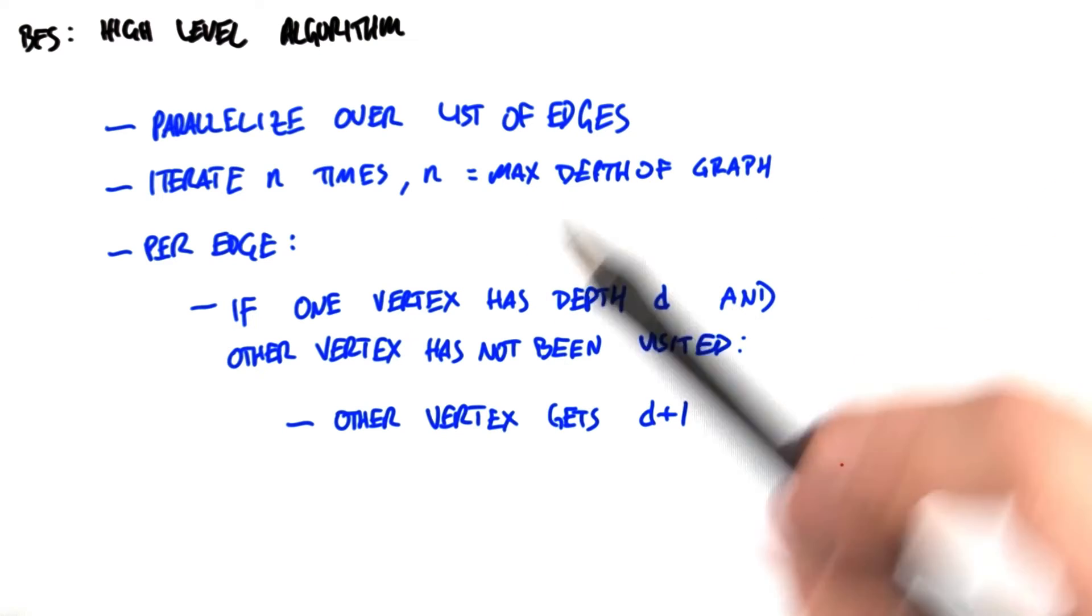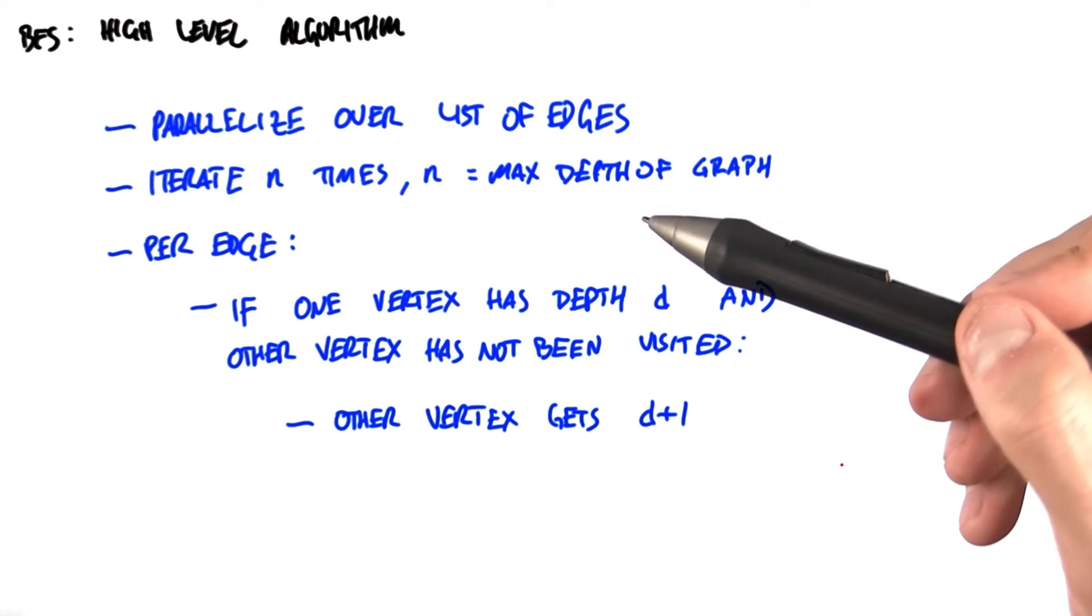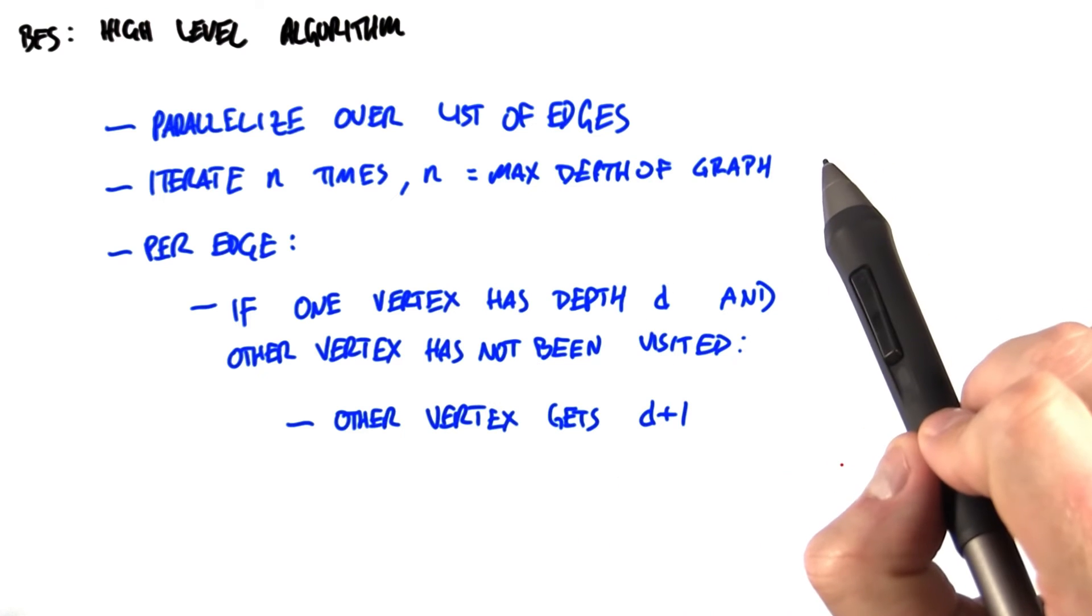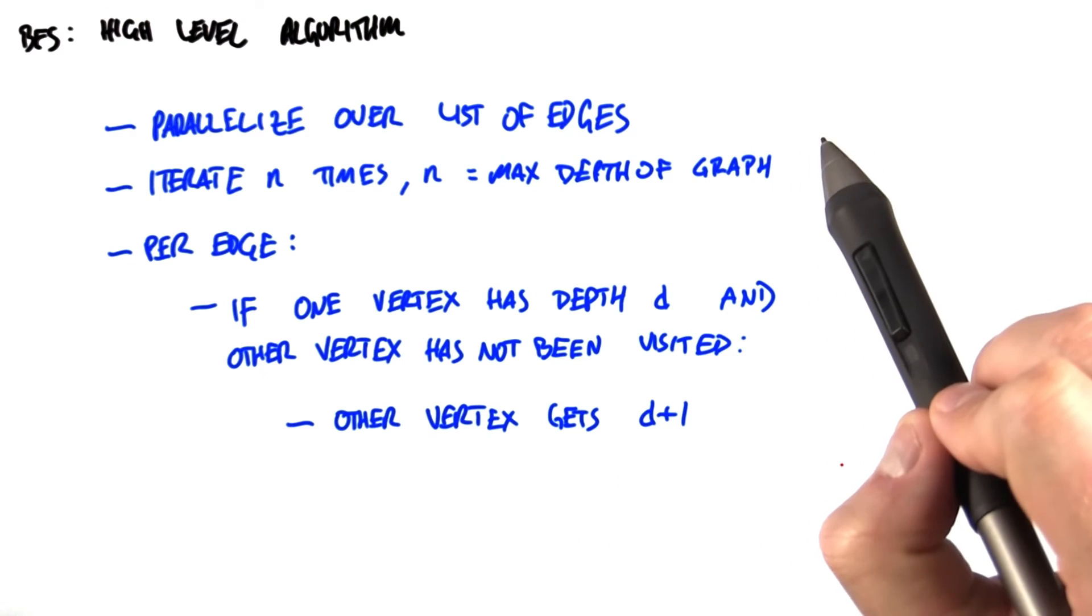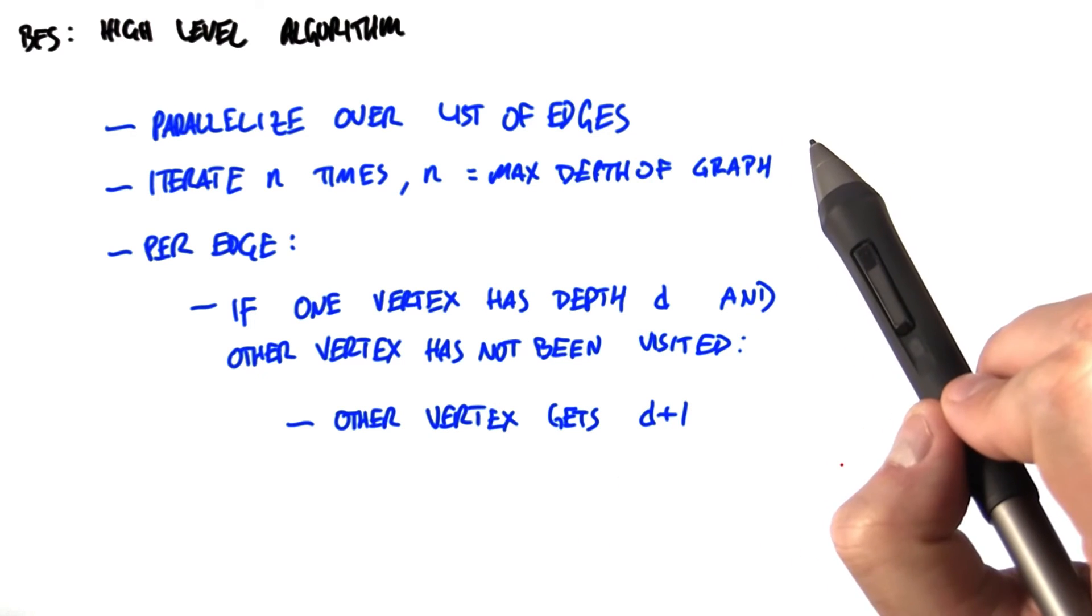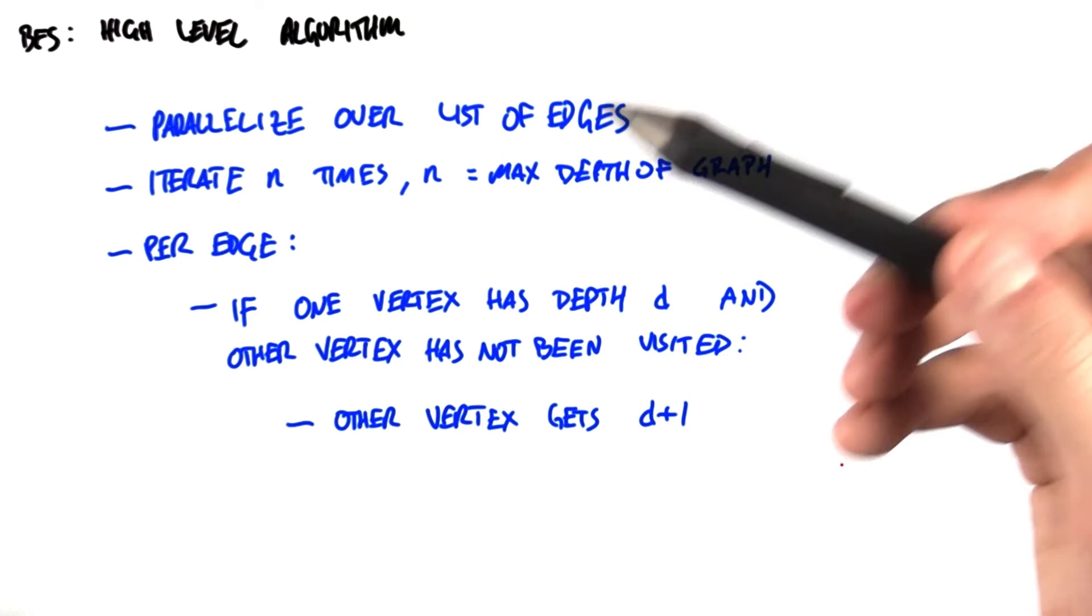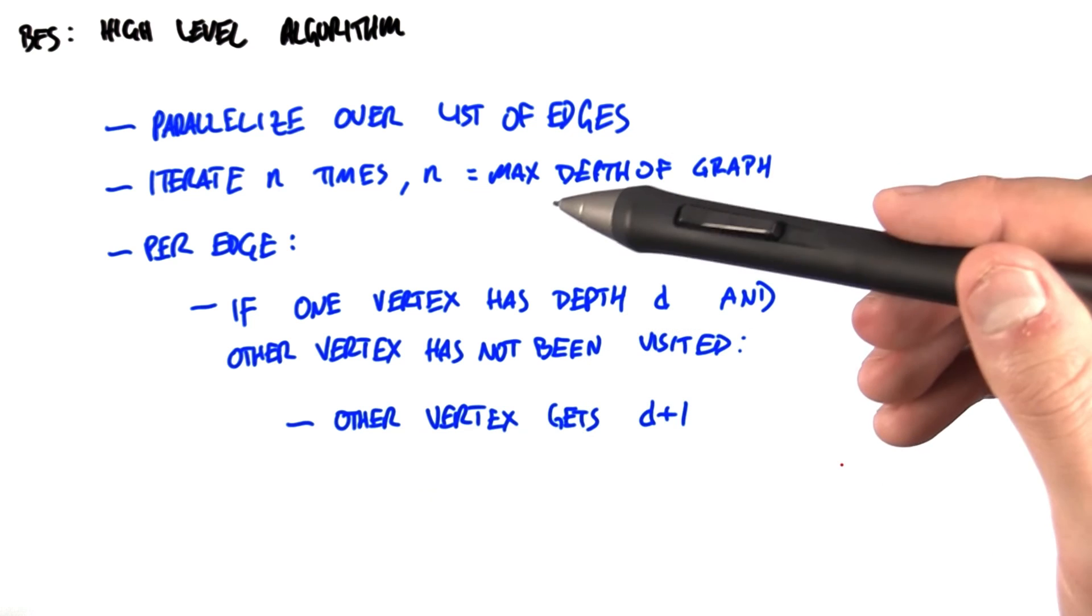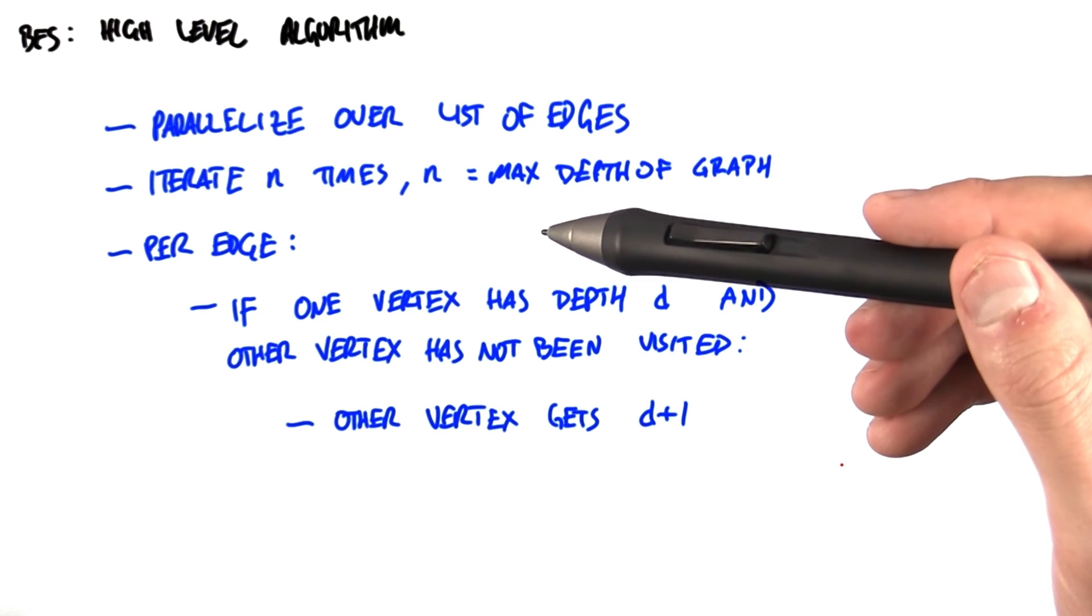So on each iteration, in parallel, we can look at each edge independently and in parallel. And if one end of that edge has a depth d, but we haven't visited the other end of the edge yet, the vertex on the other side, then we set that vertex to depth d plus 1. So the first iteration will set all the vertices that have depth 1. The next iteration will set all the vertices with depth 2, and so on.